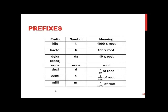The prefixes are: kilo (symbol K) means a thousand times the root — so a kilogram is a thousand grams, a kilometer is a thousand meters. Hecto (symbol H) means a hundred times the root. Deca (spelled D-E-C-A in the U.S., symbolized DA so it doesn't get confused with deci) means 10 times the root — so a decaliter is 10 liters. Deci (symbol D) is a tenth of the root — so a decimeter is a tenth of a meter.